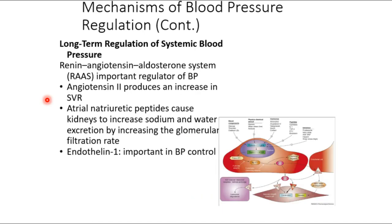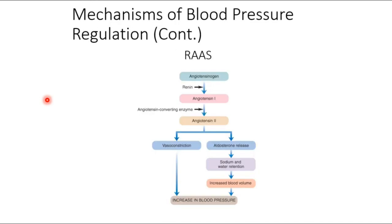RAAS is part of long-term regulation of systemic blood pressure. Another hormone related to blood pressure is ANP — atrial natriuretic peptide. It's released by the heart when it detects over-dilation; baroreceptors in the heart wall sense excessive stretch and release ANP, which makes you urinate more, decreasing blood volume and blood pressure. What would an ACE inhibitor do?